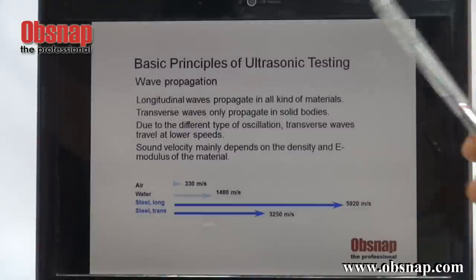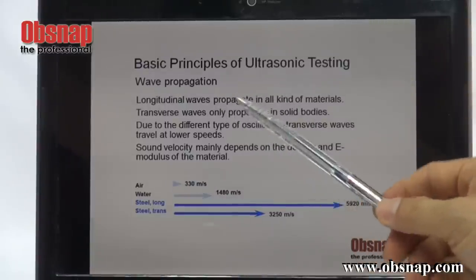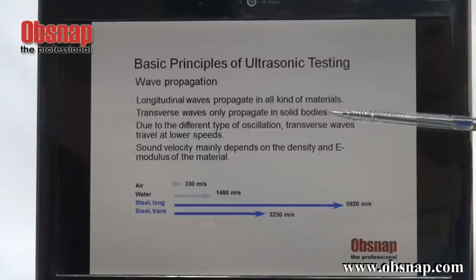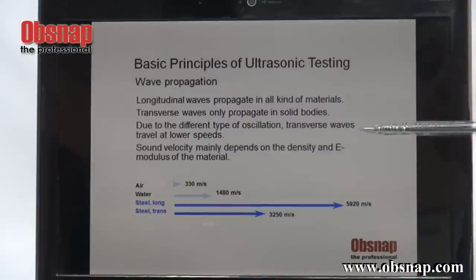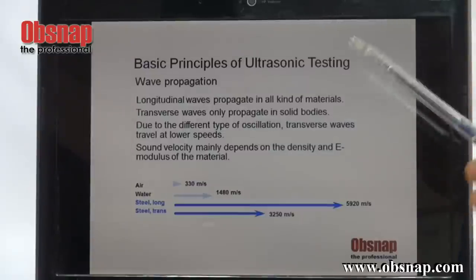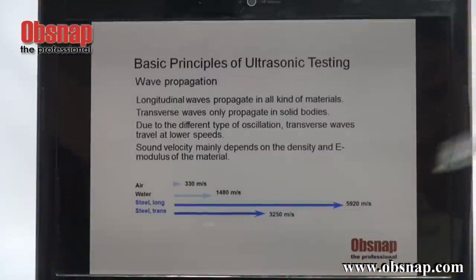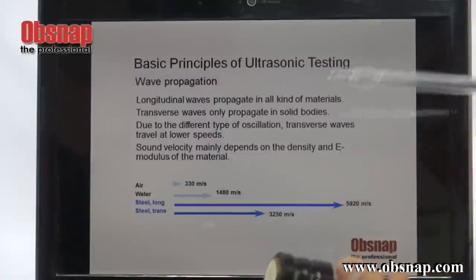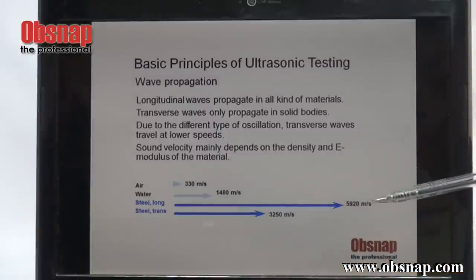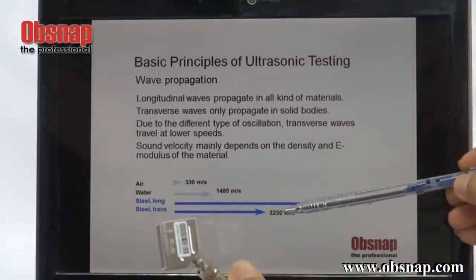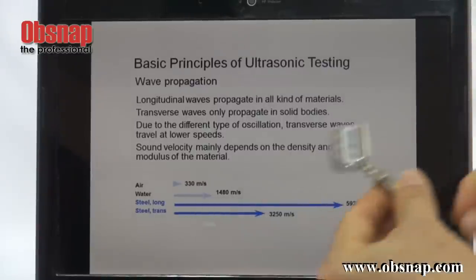About wave propagation: longitudinal wave is actually propagated in all kinds of materials. However, transverse wave only propagates in solid bodies. Due to the different type of oscillation, transverse wave travels at lower speed. For the same material, when using a straight probe, the sound actually travels at the speed of 5,920 meters per second. And transverse speed is only 3,250 meters per second — there's a lot of difference.